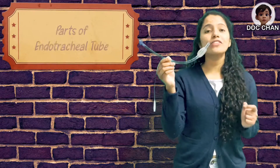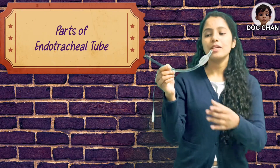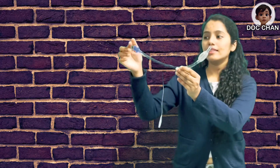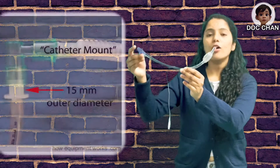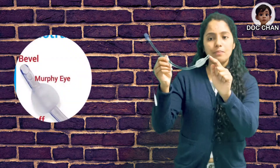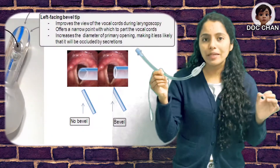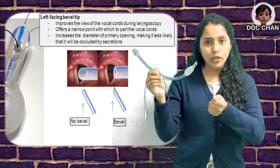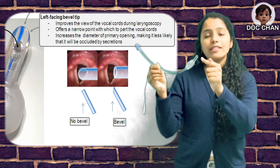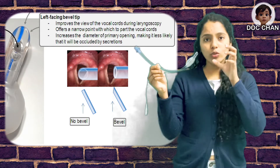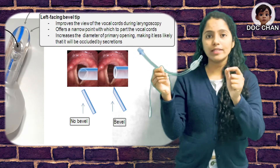Let's first discuss about different parts of the tube and its function. So if you can see the tube, it has got a patient's end and a ventilator end, or it can be connected to an ambo bag or a Bain circuit. This part is called the bevel and this bevel is facing towards the left side. When you're intubating a patient, you take the laryngoscope in your hand and start intubating from the right side, and this bevel is towards the left side such that when you look at the vocal cord, you'll be able to visualize it properly.